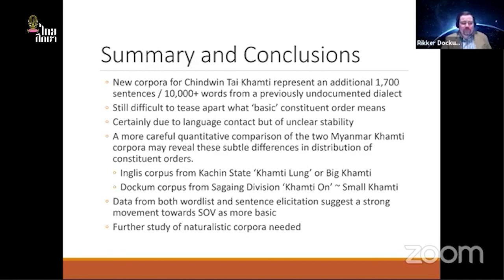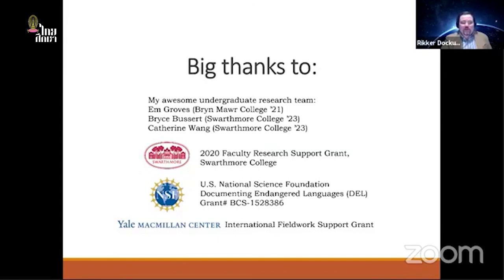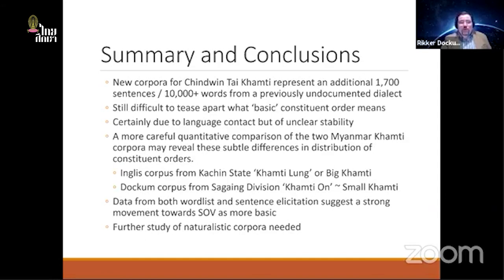The main missing piece is further study of naturalistic corpora — I have those texts but they represent significantly more work to be done. I'll leave you with the thought that I'm more convinced than I was two years ago that if we were to call something basic, we would want to call SOV the basic order, since it's by far the most frequent. But we still see SVO and many SVO-type things peppered throughout the data. Thanks to my undergrad research assistants and the funders of this work.